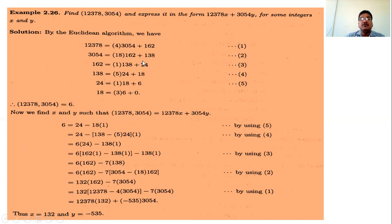Now substituting the value of 24: 24 = 162 minus 138 times 1. We get 162 times 6 times 1 minus 138 times 1 times 6, and this minus 138 times 6 minus 138 times 1 becomes minus 138 times 7, because taking minus 138 common gives 6 plus 1 = 7. Then substitute the value of 138.